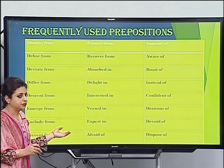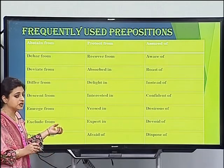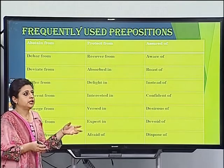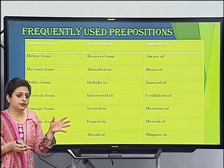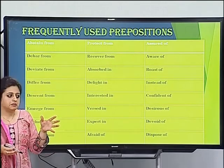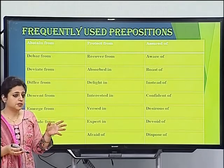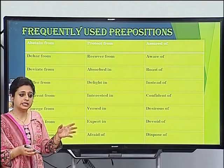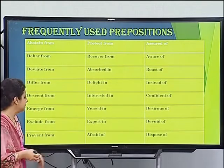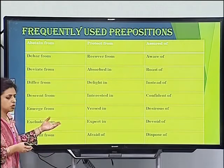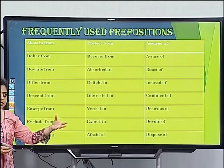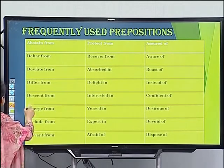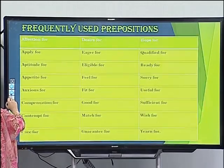'Devoid of' — to be devoid of something means to be lacking it. For example, she is devoid of pride. 'Dispose of' — when you get rid of something that has become useless to you.